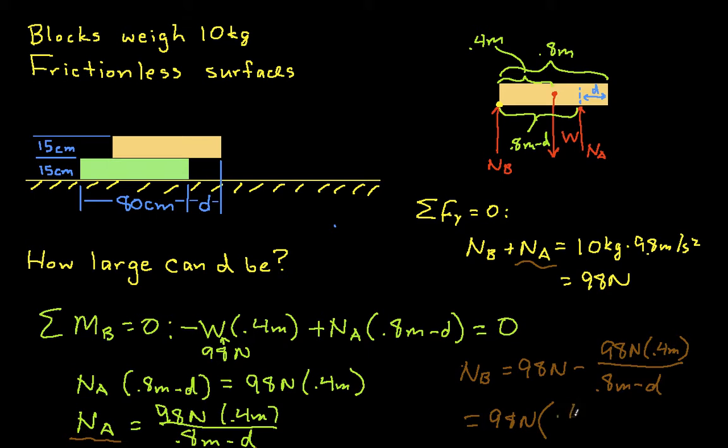So, if I put that over, all over a common denominator, I have 0.8 meters minus D minus 0.4 meters over 0.8 meters minus D. And I can simplify this somewhat. Where NB is equal to 0.4 meters minus D over 0.8 meters minus D. And this is times 98 newtons. So, we have an expression for NA. It's 98 newtons times 0.4 meters over 0.8 meters minus D. NB is 98 newtons times 0.4 meters minus D over 0.8 meters minus D.